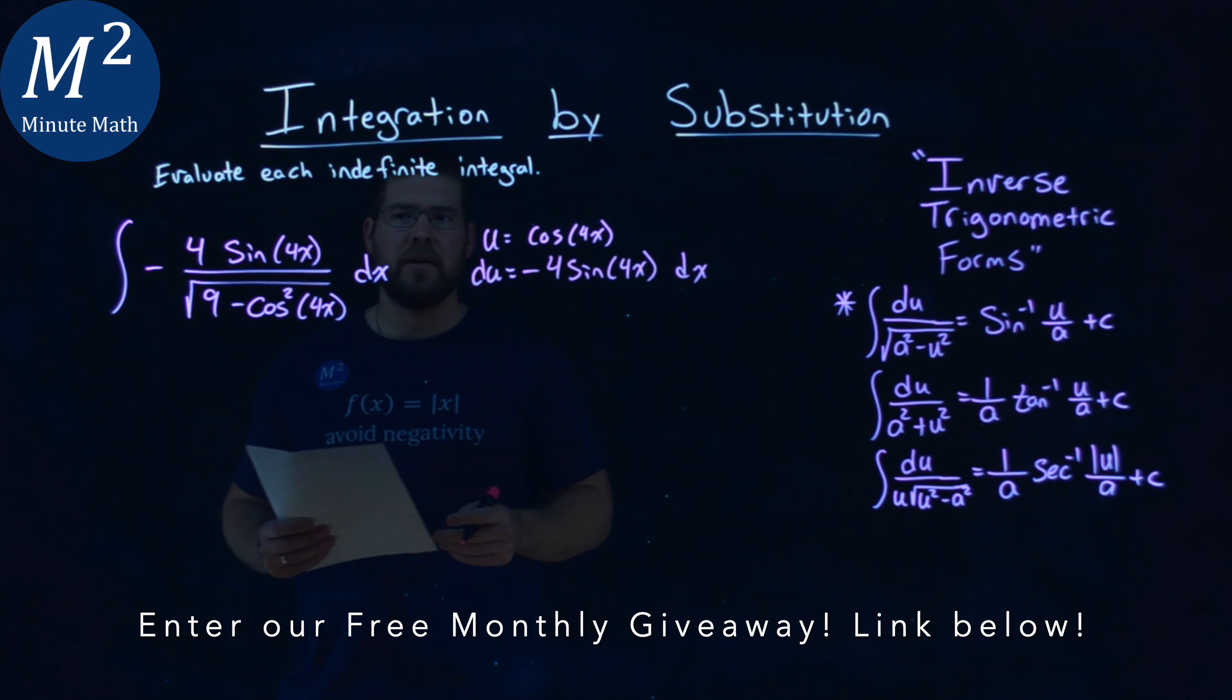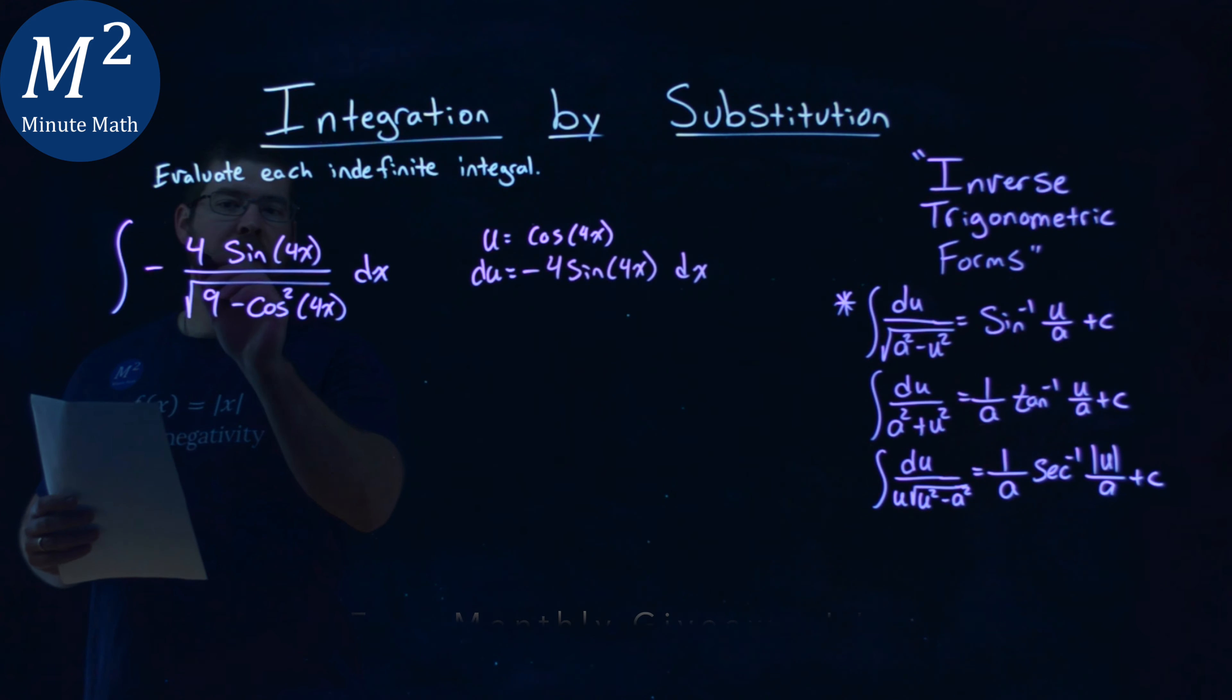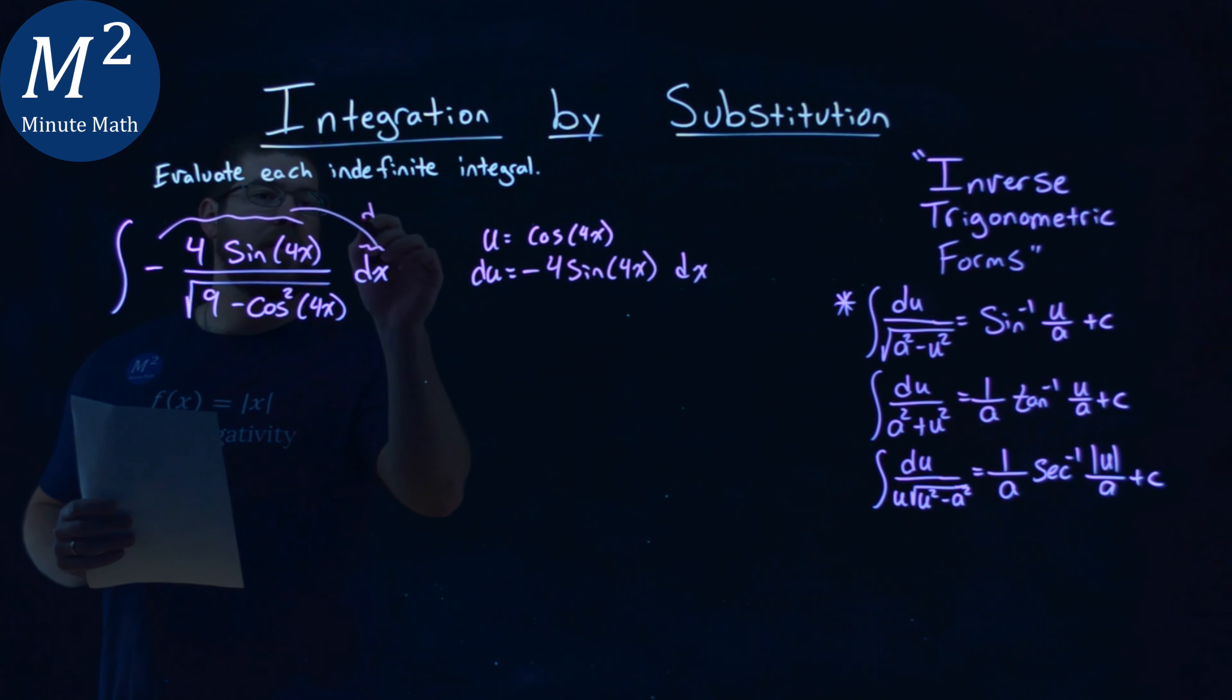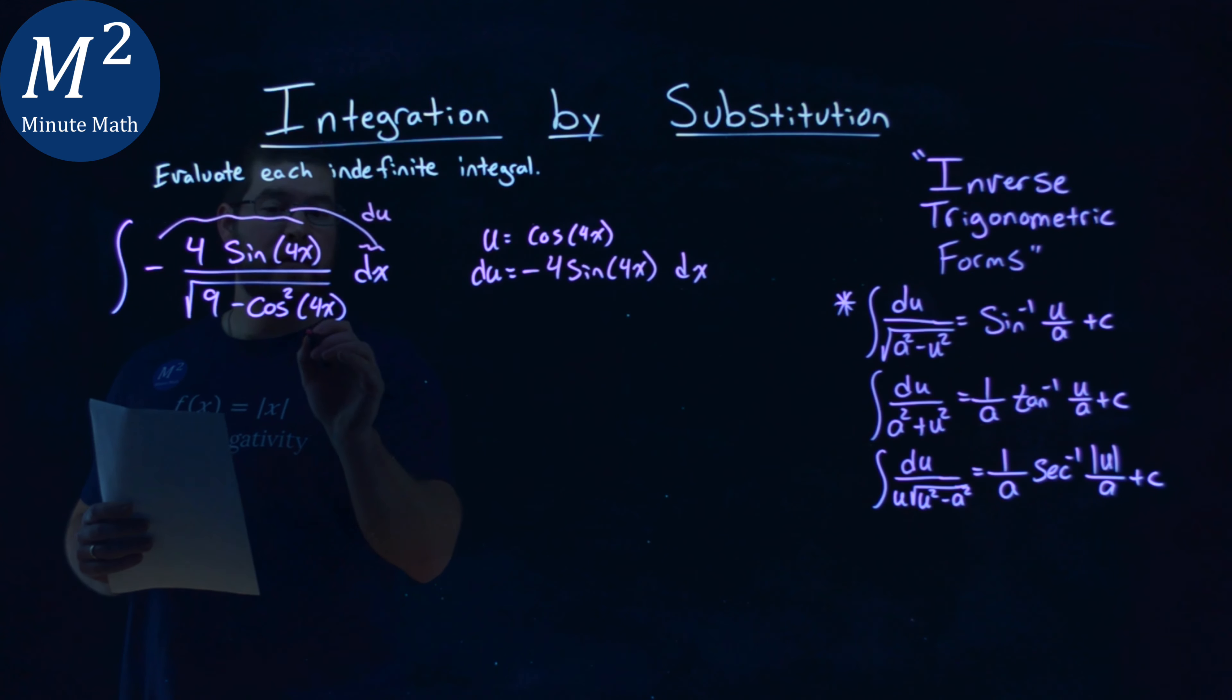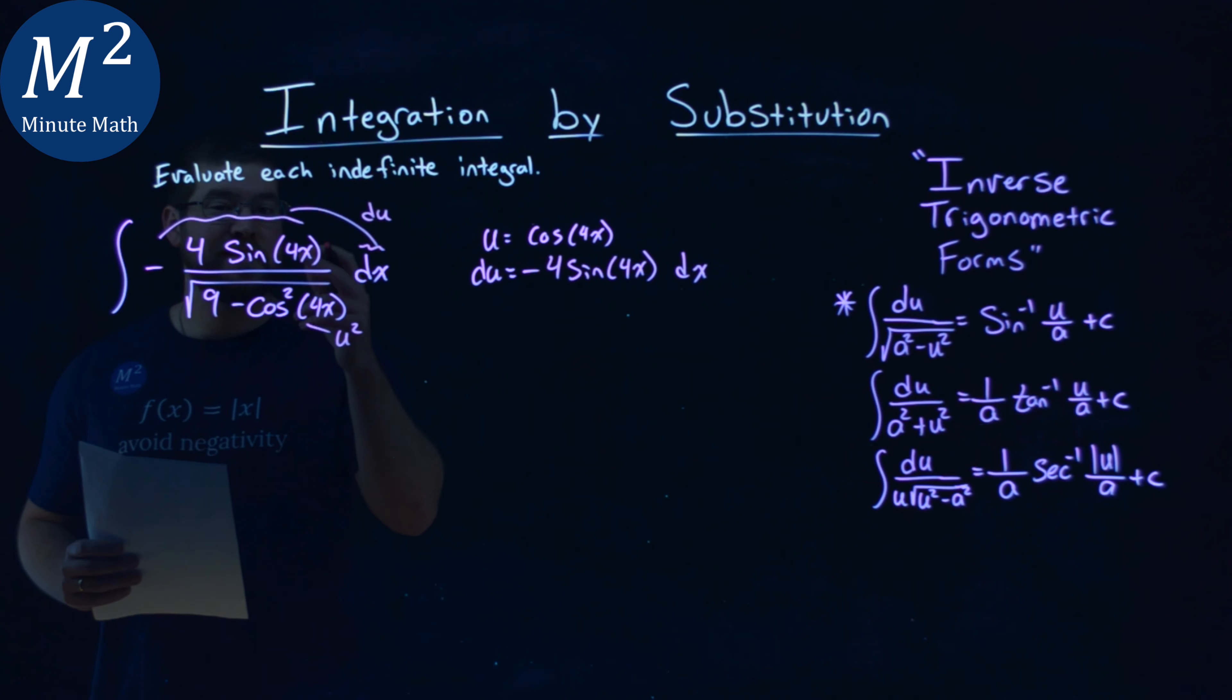We have that there, and look, that actually lines up great. My negative 4 sine of 4x dx is a perfect du. If my u-value is cosine of 4x, then this is clearly u-squared - that cosine squared of 4x.